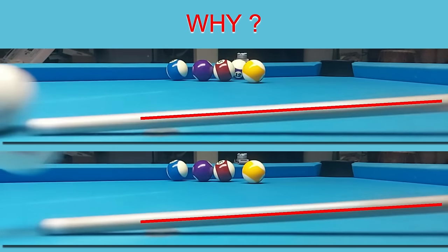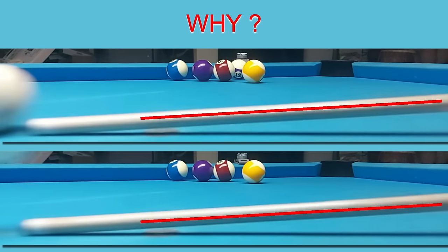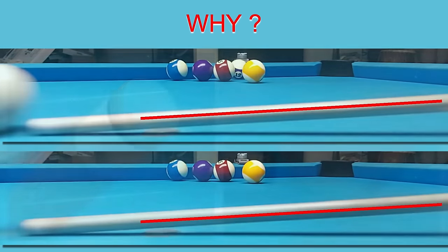The shot that doesn't miscue dips just a little bit, but it definitely contacts the cue ball, and then the tip is driven down into the cloth. When the tip rebounds off the cloth, the cue ball is long gone.